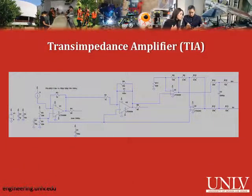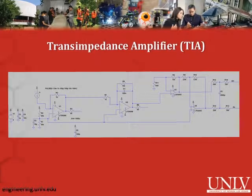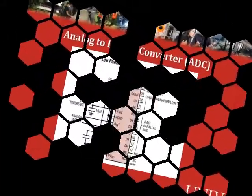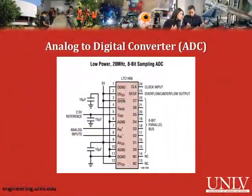This is a transimpedance amplifier, which will convert the signal of small current pulses from the silicon photomultiplier into amplified voltage pulses.